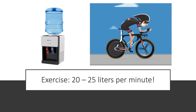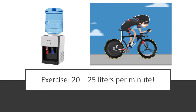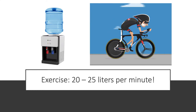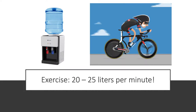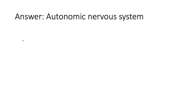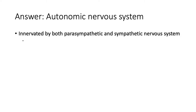How can cardiac output vary so much depending on activity? The answer is the autonomic nervous system. The autonomic nervous system is innervated by both the parasympathetic and sympathetic nervous systems, and this modifies both heart rate and contraction force.